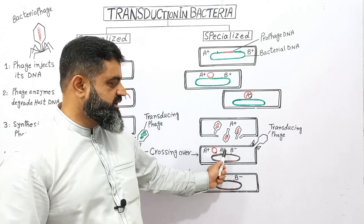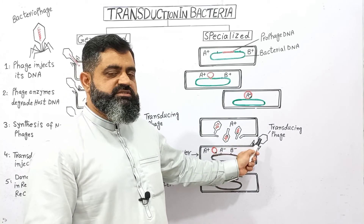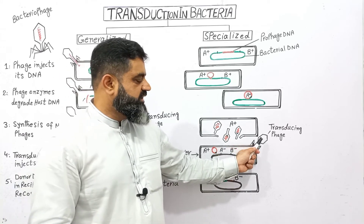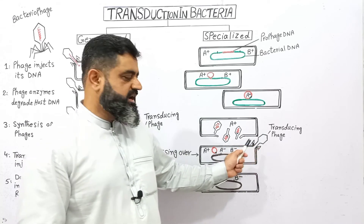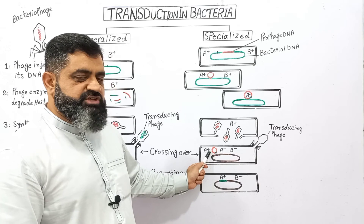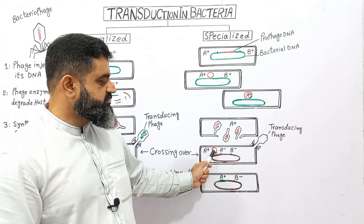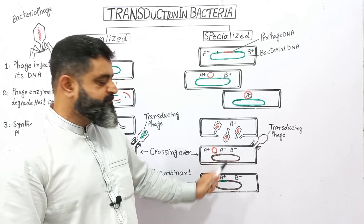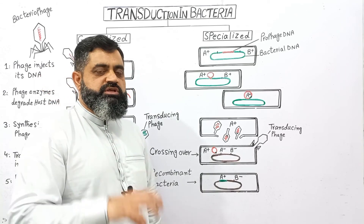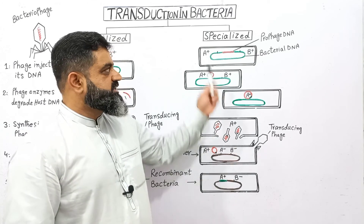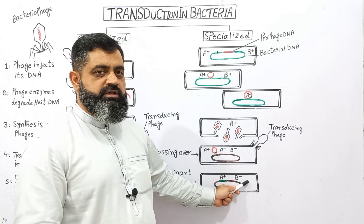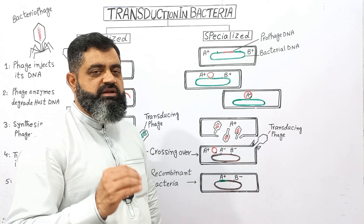When this transducing phage attacks the next bacterium — the recipient bacterium — it injects its DNA into the cell, which contains A negative and B negative. The DNA of the transducing phage enters the cell, crossing over takes place between the two chromosomes, and the bacterial A positive gene incorporated into the viral DNA becomes part of the recipient chromosome. This DNA will become A positive and B negative, which is known as a recombinant bacterium. In this way, during the lysogenic cycle of bacteriophage, specialized transduction takes place and DNA of a donor bacterium is transferred into a recipient bacterium with help of a phage virus, though the mechanism is slightly different.